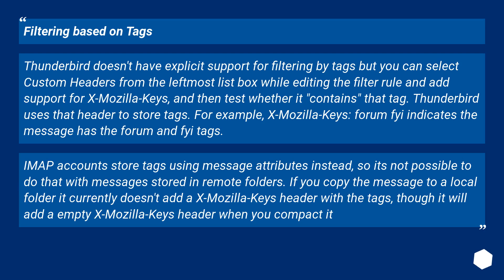From the Thunderbird knowledge base on filters — filtering based on tags: Thunderbird doesn't have explicit support for filtering by tags, but you can select custom headers from the leftmost list box while editing the filter rule and add support for x-Mozilla-Keys, and then test whether it contains that tag. Thunderbird uses a header to store tags. For example, x-Mozilla-Keys containing 'FYI' indicates the message has the FYI tag.